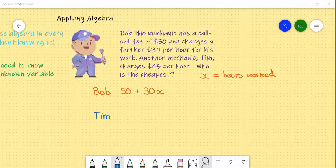Tim on the other hand has a simpler way of doing it. His is simply $45 times x.